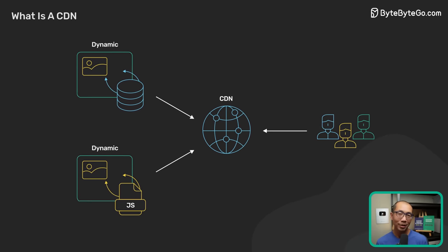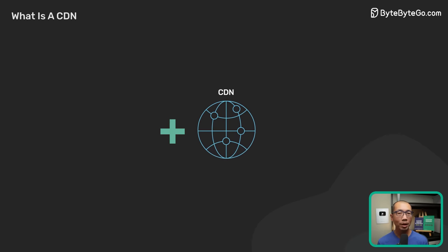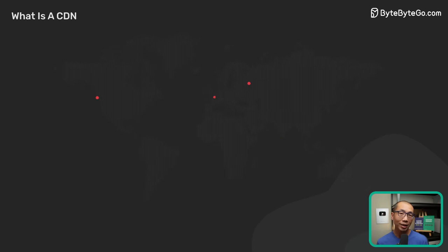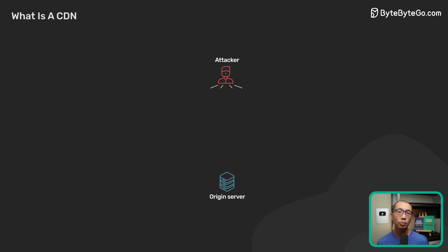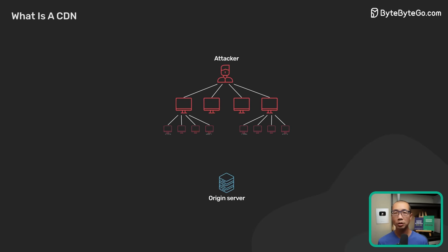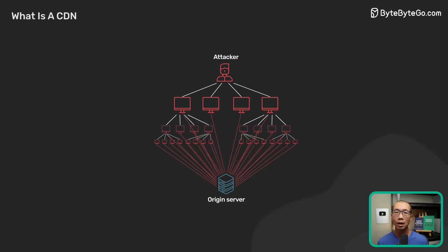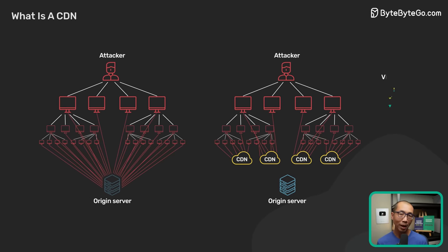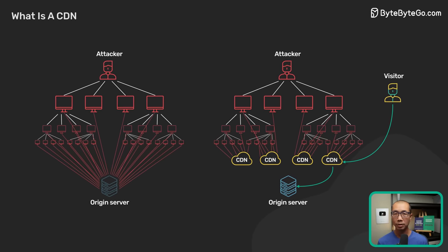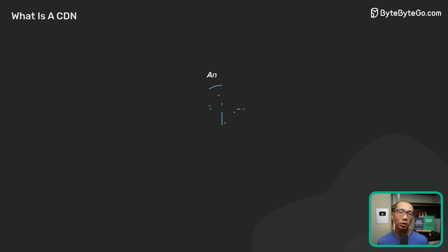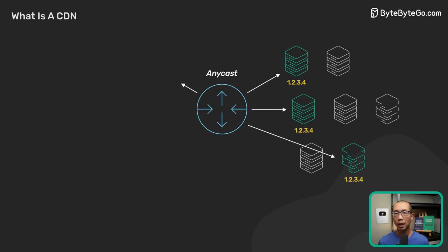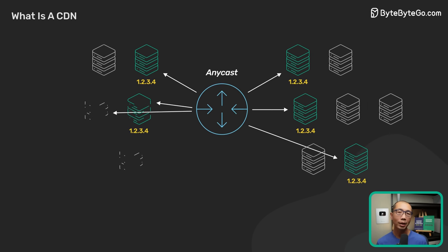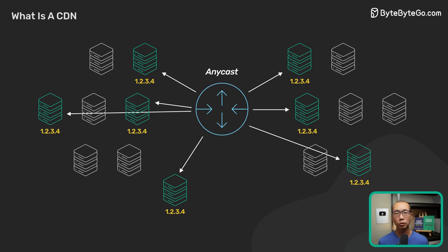Besides performance, a modern CDN brings two other major benefits. First is security. All modern CDNs have huge network capacity at the edge. This is the key to providing effective DDoS protection against large-scale attacks by having a network with capacity much larger than the attackers. This is especially effective with a CDN built on an Anycast network, as it allows the CDN to diffuse the attack traffic over a huge number of servers.